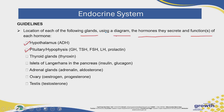Remember the pituitary gland is our master gland, but when asked to name the gland we need to call it the pituitary or the hypophysis. There's the thyroid gland that produces thyroxin, the Islets of Langerhans in the pancreas that produce insulin and glucagon. Please note that the gland is the Islets of Langerhans and they are found in the pancreas. We also have the adrenal gland which secretes adrenaline and aldosterone, the ovaries secreting estrogen and progesterone, and the testes. All those glands need to be learned.